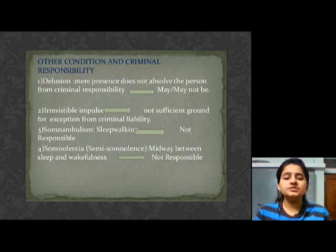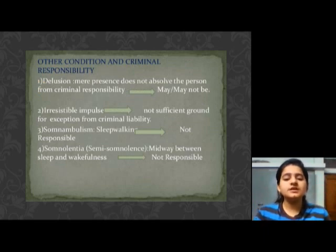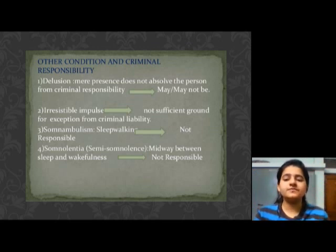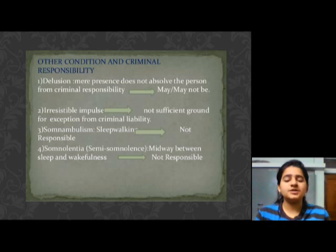Let's come to the other conditions and criminal responsibility. First is delusion. A delusion is a mistaken belief that is held with strong conviction even when presented with superior evidence to the contrary — something that is falsely or delusively believed or propagated. Second is the irresistible impulse. It is not a sufficient ground for exception from criminal liability.